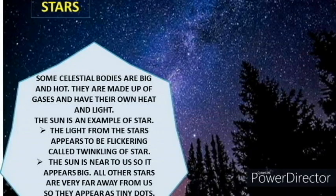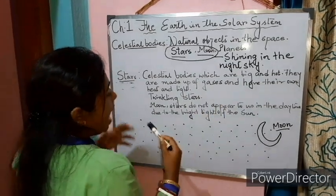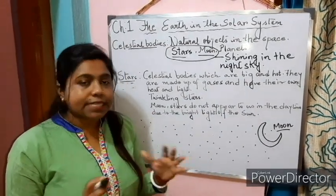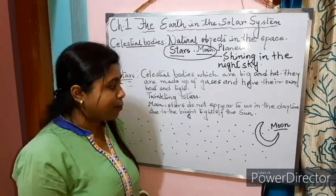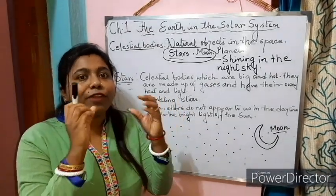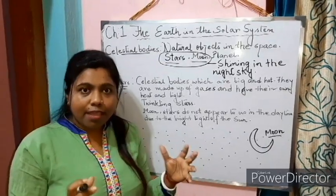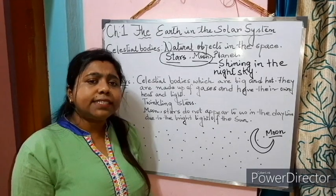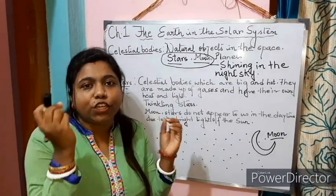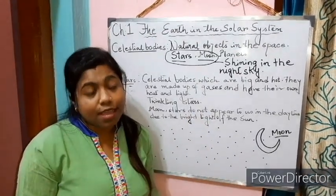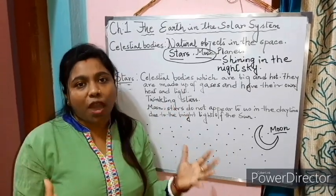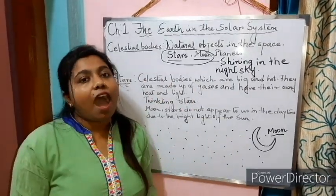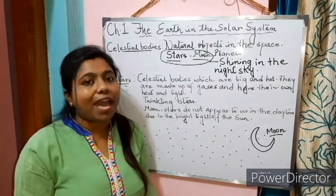What are stars? These diamonds in the sky — stars are the celestial bodies which are big and hot. They are made up of gases and have their own heat and light. Stars do not revolve around any object; they are fixed at their places. Stars are twinkling — they always give a flickering light, so we call them twinkling stars. Sun is an example of a star. Stars appear so small and tiny because they are far away from us. But we see the sun as large because it is closer to us.